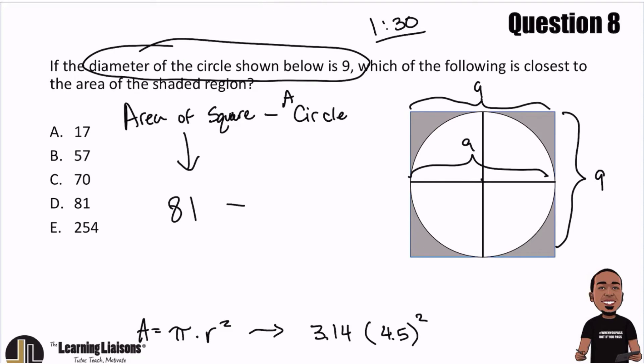So now, all we have to do is plug and chug. Grab that calculator, 3.14 multiplied by 4.5 squared. Make sure to use PEMDAS, so make sure you compute the right way. So then we have 63.585.